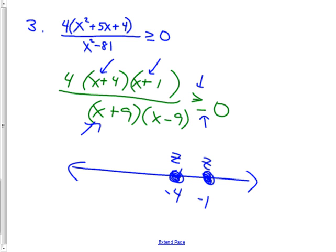The things on the bottom are 9 and negative 9. And the things on the bottom are not 0s. They're things that make it undefined. They will never work. So we can leave them empty.